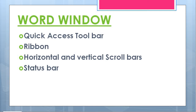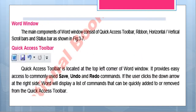Assalamu alaykum students, how are you all? I hope you all will be fine. As you know, we are on chapter number three: Office Automation. So today our topic is Word Window. As you know, Word Window consists of four components: Quick Access Toolbar, Ribbon, horizontal and vertical scroll bars, and Status Bar. These are the main components of the Word window, as we have already discussed. So let's move to the Quick Access Toolbar.